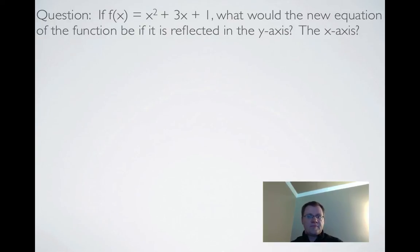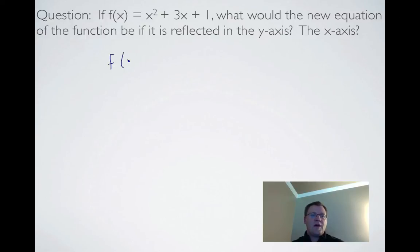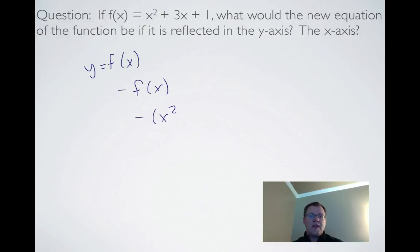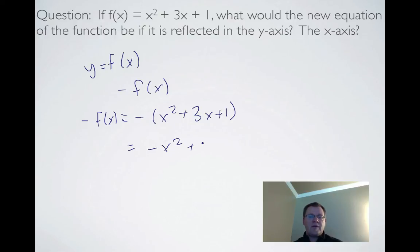For part B, what happens when f(x) = x² + 3x + 1 is reflected in the x-axis? A reflection in the x-axis means the y-values switch signs, and since y equals f(x), we get negative f(x). So negative f(x) equals -(x² + 3x + 1), which gives us -x² - 3x - 1. That is our new function.